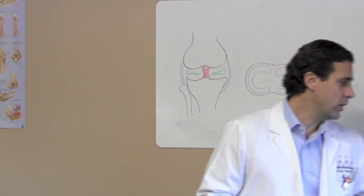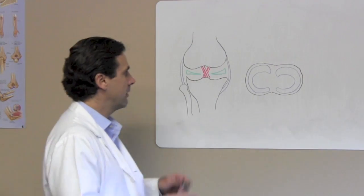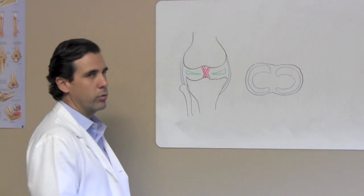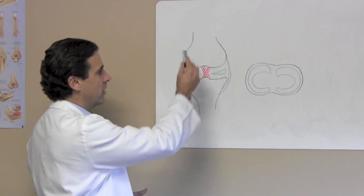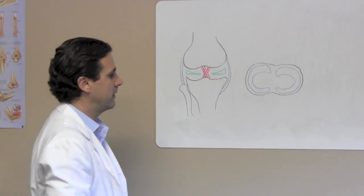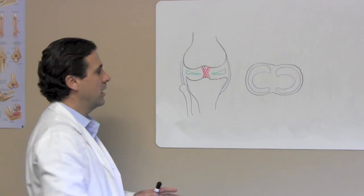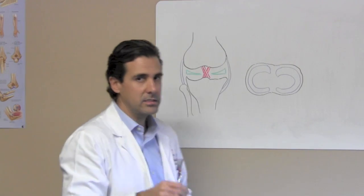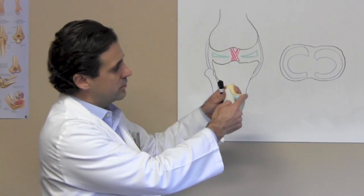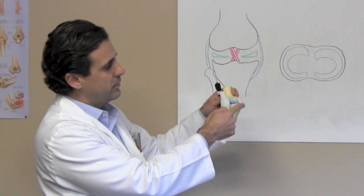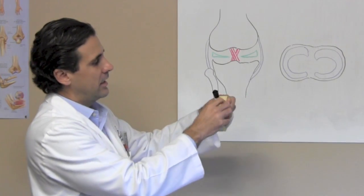We're going to go over some basic anatomy of the knee. I've already drawn this on the whiteboard here. This is your knee — this is the femoral condyle, this is the tibial plateau. The stabilizing structures of the knee are the medial collateral ligament, which is on the inside of the knee — I'll show you here on a model as well — and the lateral collateral ligament on the outside of the knee.